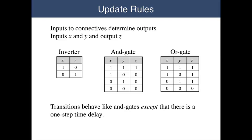The output of an AND gate is true if and only if all of its inputs are true, as suggested by the second table. And the output of an OR gate is true if and only if at least one of its inputs is true. Transitions behave just like AND gates except that there is a one-step time delay. The output occurs one step after the inputs.